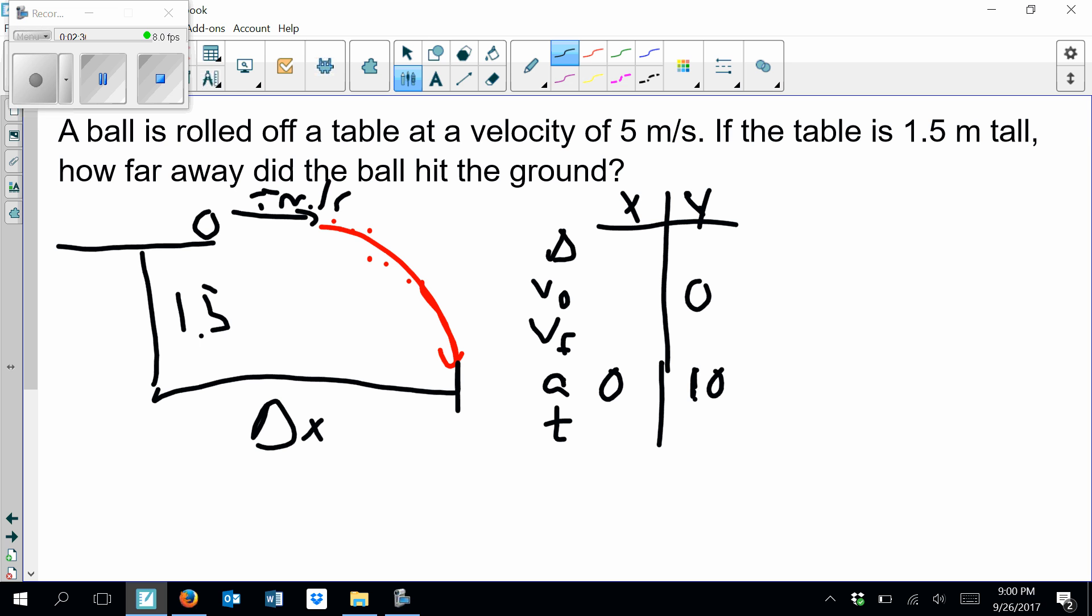Then we go back into the problem and say, all right, what other information do I know? Well, I know the table is 1.5 meters tall. That means my ball is going to fall 1.5 meters. That's my Δy. That's the height.